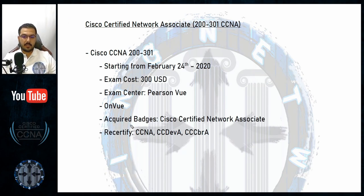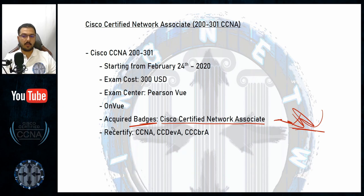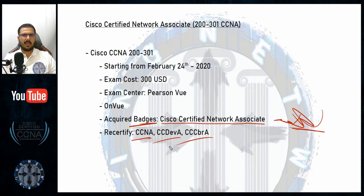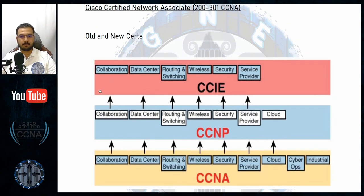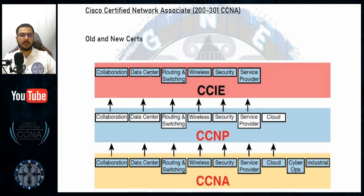After finishing the exam and becoming certified, you receive one single badge from Cisco called the Cisco Certified Network Associate, with no extra titles. It also recertifies an existing CCNA that is close to expiring. You may also see the Cisco Certified DevNet Associate and Cisco Certified CyberOps Associate — I'll explain those in a moment.